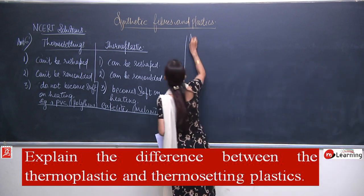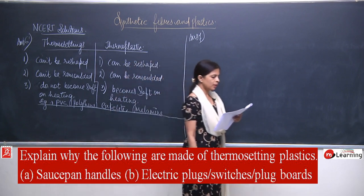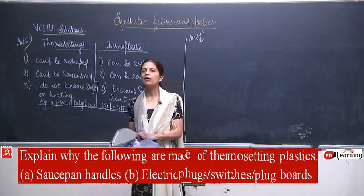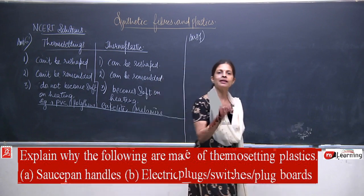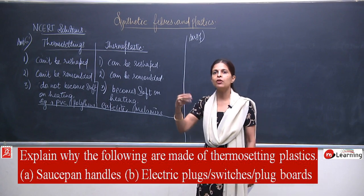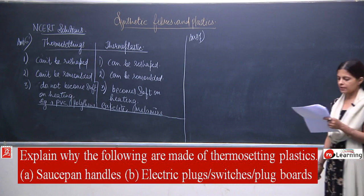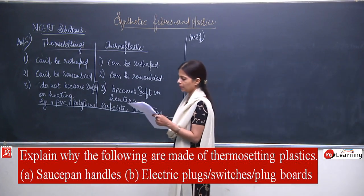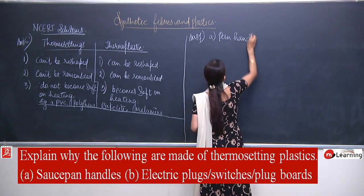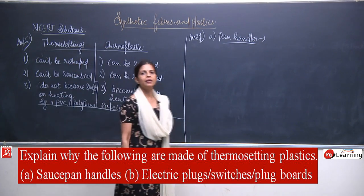Question number 7: explain why the following are made up of thermosetting plastics — saucepan handles, electric plugs, switches, and plug boards. The reason we choose a particular material depends on its properties. For saucepan handles, the property required is that the material does not become soft or melt on heating.